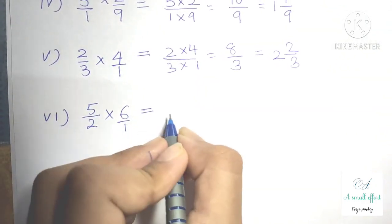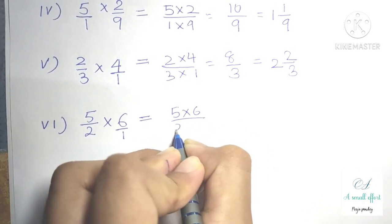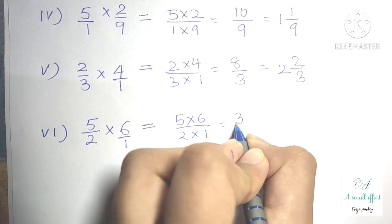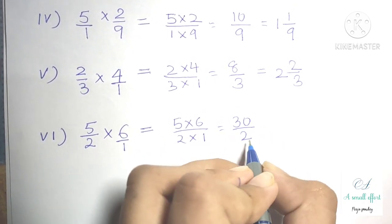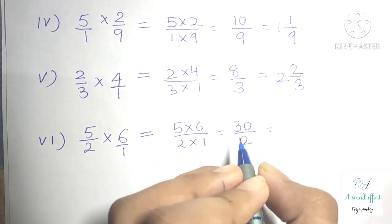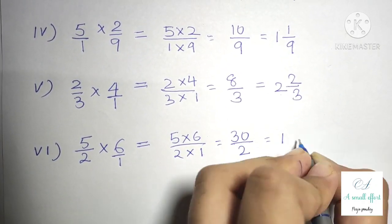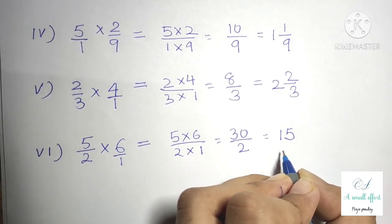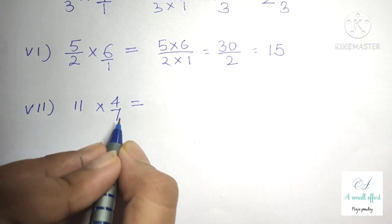Part 6 is 5 by 2 into 6. We can write 6 as 6 by 1, multiply numerator with numerator and denominator with denominator: 5 times 6 is 30 by 2. In the 2 times table, 30 comes 15 times, so the answer is a whole number: 15.